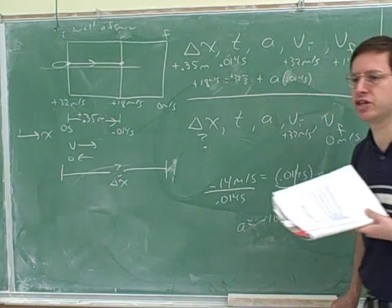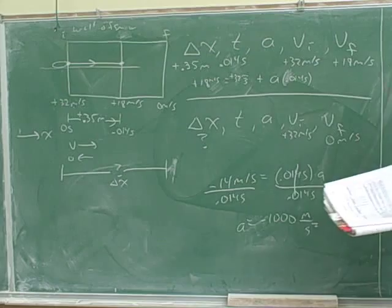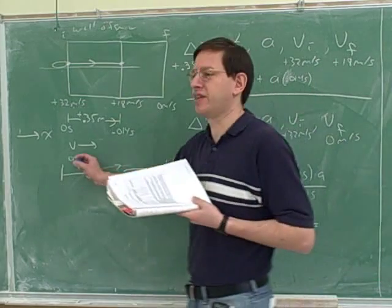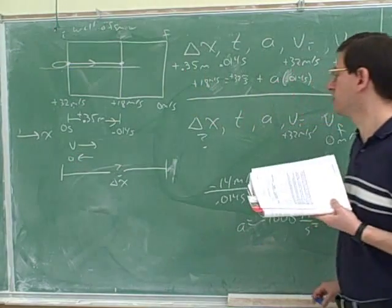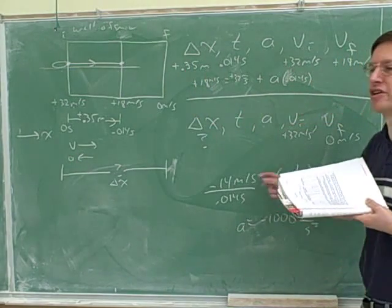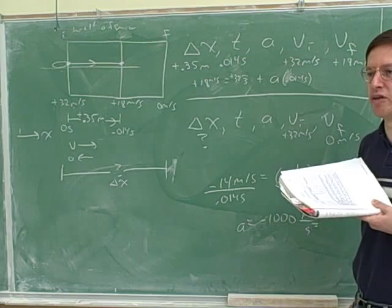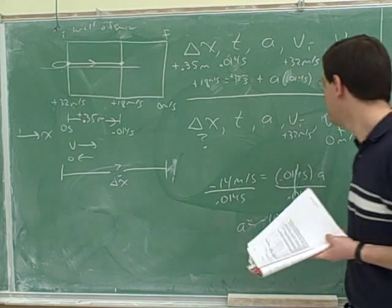Does it make sense that the acceleration should be negative? Yeah, we would have predicted that up front. If this had not come out negative, we would have known we made an algebra mistake and could go back and check that.